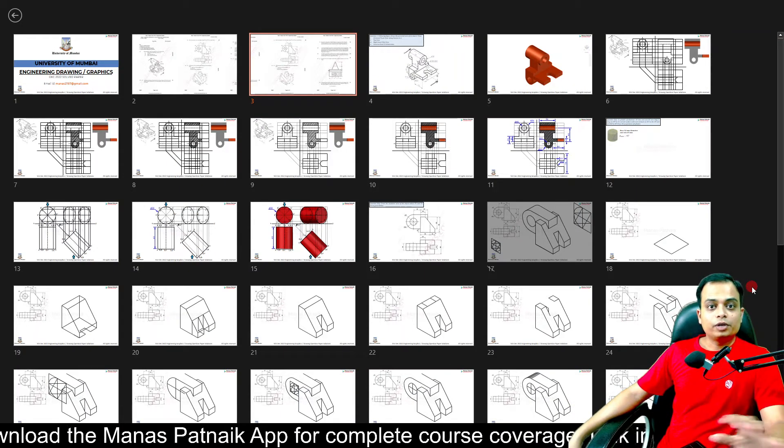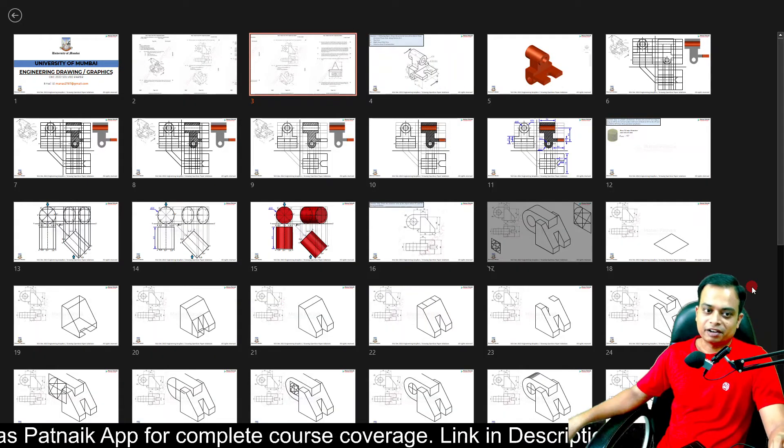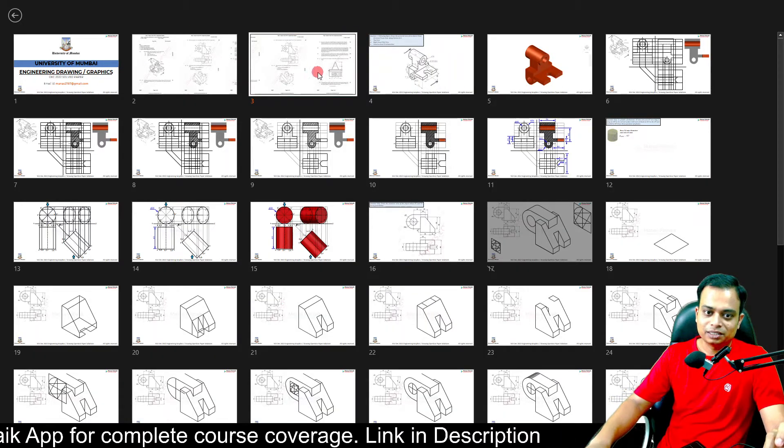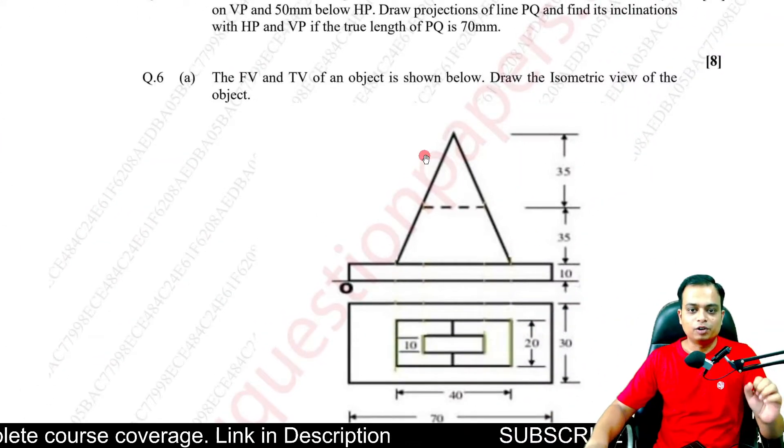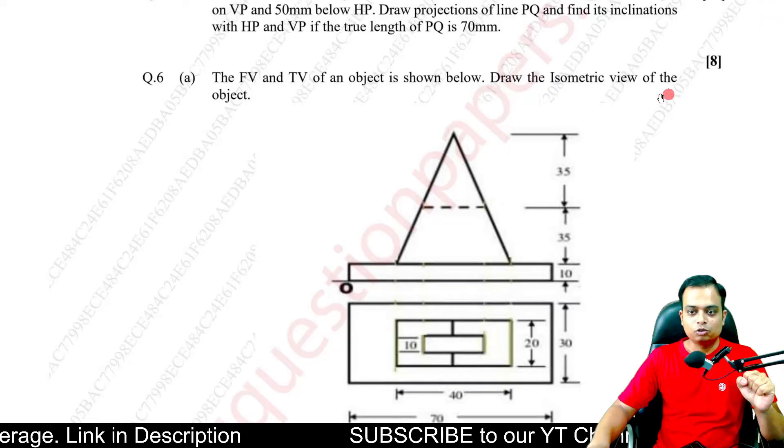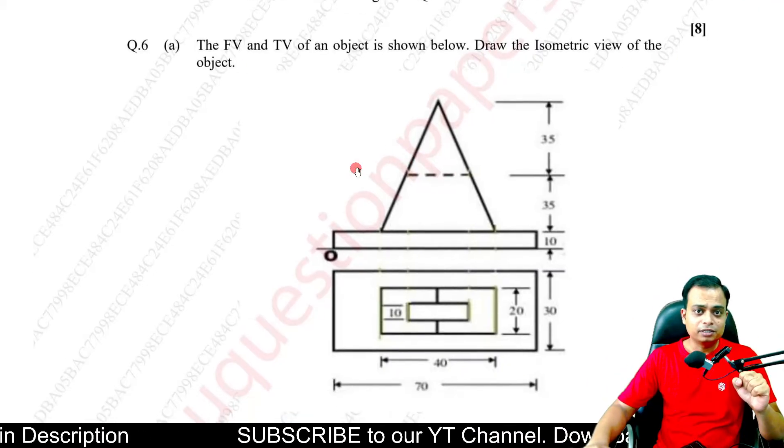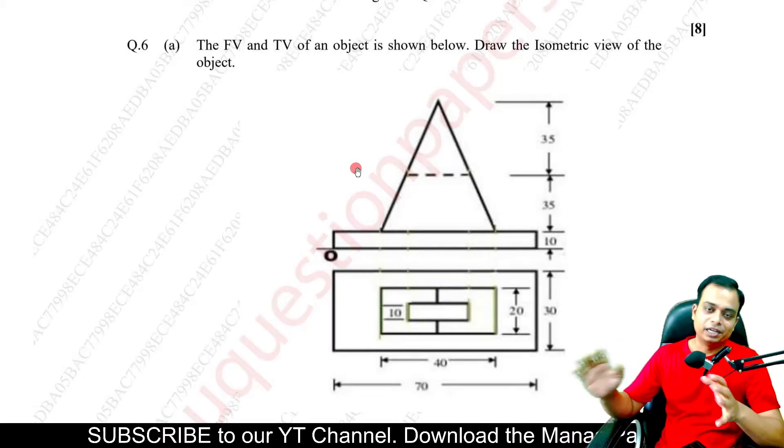On to the final question in this question paper series from the University of Mumbai, the subject is Engineering Graphics. Problem 6a: We've been given the front and top view of an object. Draw the isometric view of the object. It's a very easy problem, let me tell you honestly, and you can crack this in the next 5 to 10 minutes, very easy.